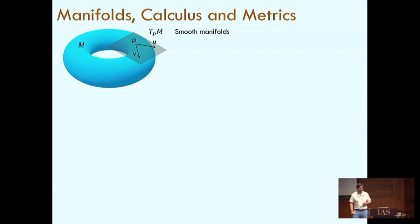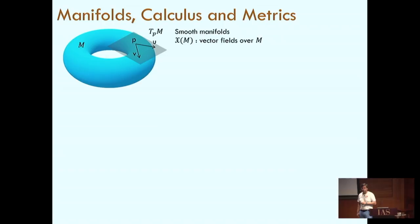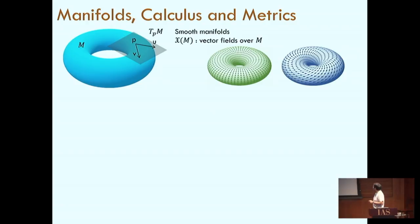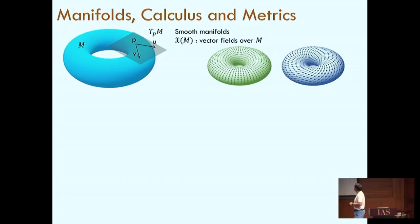Once we have manifolds, we can have functions on manifolds — just associate a real number to every point. Something more interesting is a vector field over a manifold, which tells you at each point a direction where you should proceed next — a unique direction at every point. If you start following a vector field, it gives rise to curves.